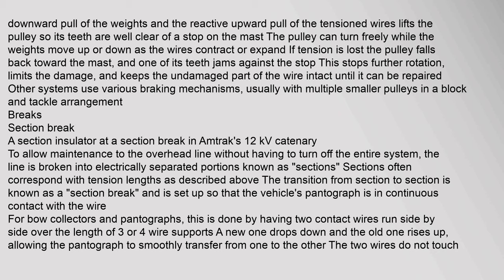A section insulator at a section brake allows maintenance to the overhead line without having to turn off the entire system. The line is broken into electrically separated portions known as sections, which often correspond with tension lengths. The transition from section to section is known as a section brake, set up so that the vehicle's pantograph is in continuous contact with the wire. This is done by having two contact wires run side by side over the length of three or four wire supports — a new one drops down and the old one rises up, allowing the pantograph to smoothly transfer from one to the other.